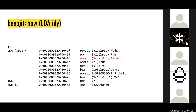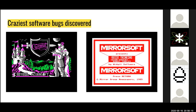I could do an entire one-hour talk just on how we get Beebjit fast. But just to move on and cover some other things — anyone that's written an emulator will attest that you will uncover some crazy, crazy bugs. I've just picked two here to quickly talk about.